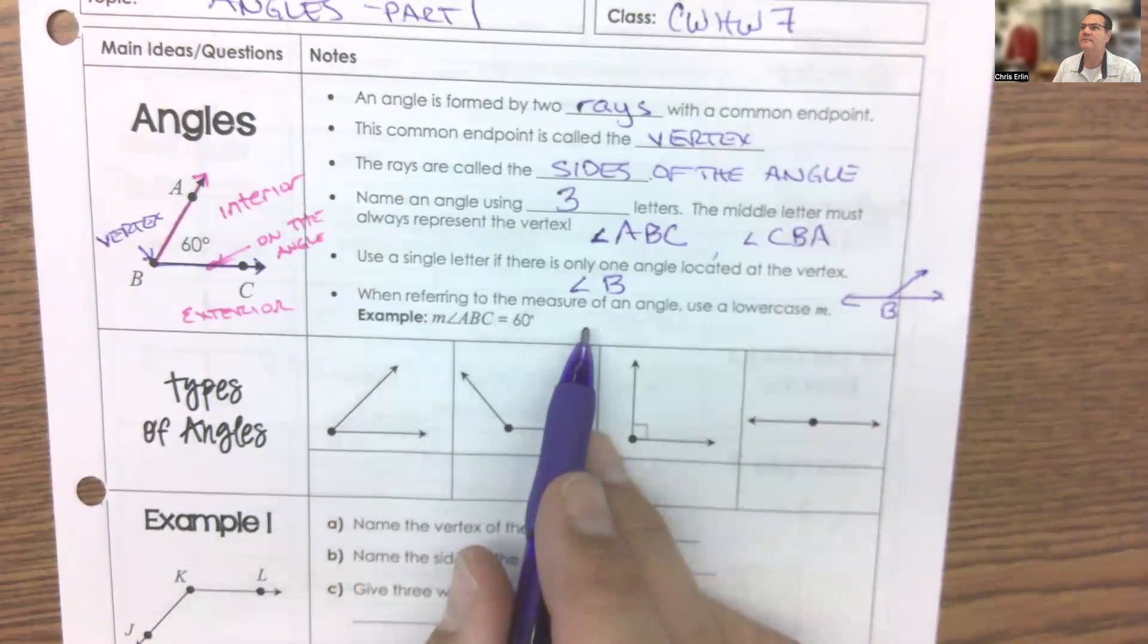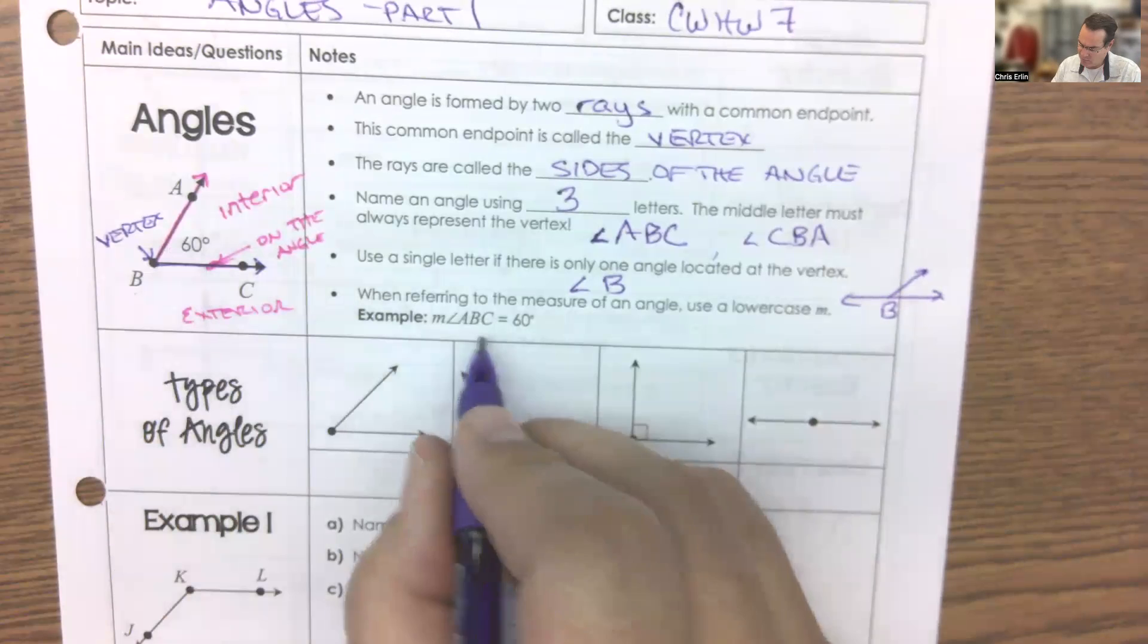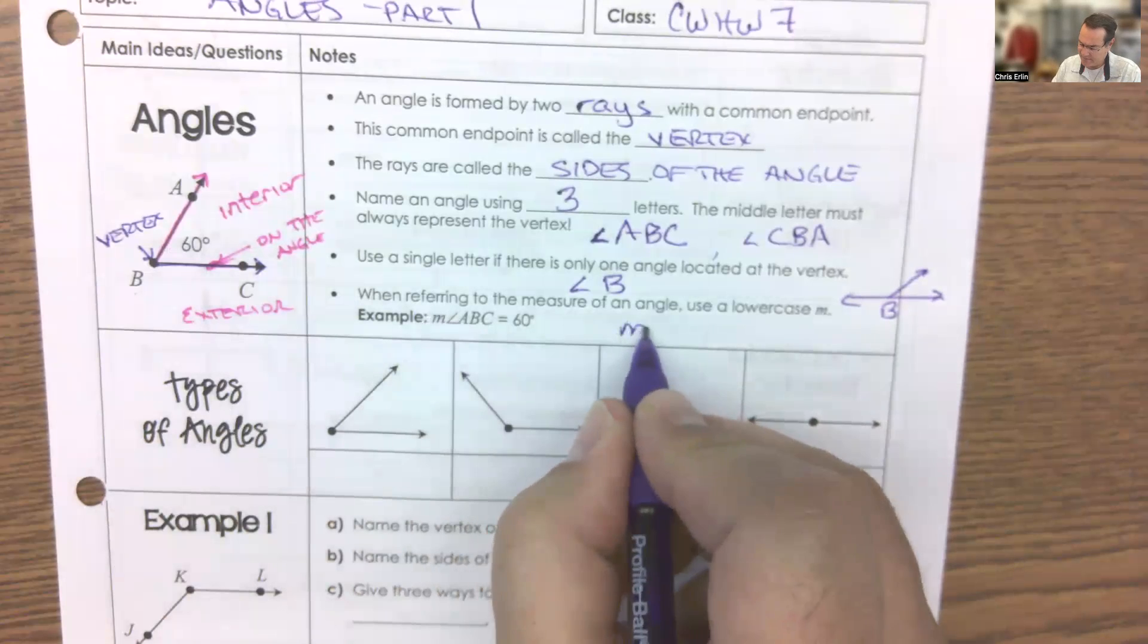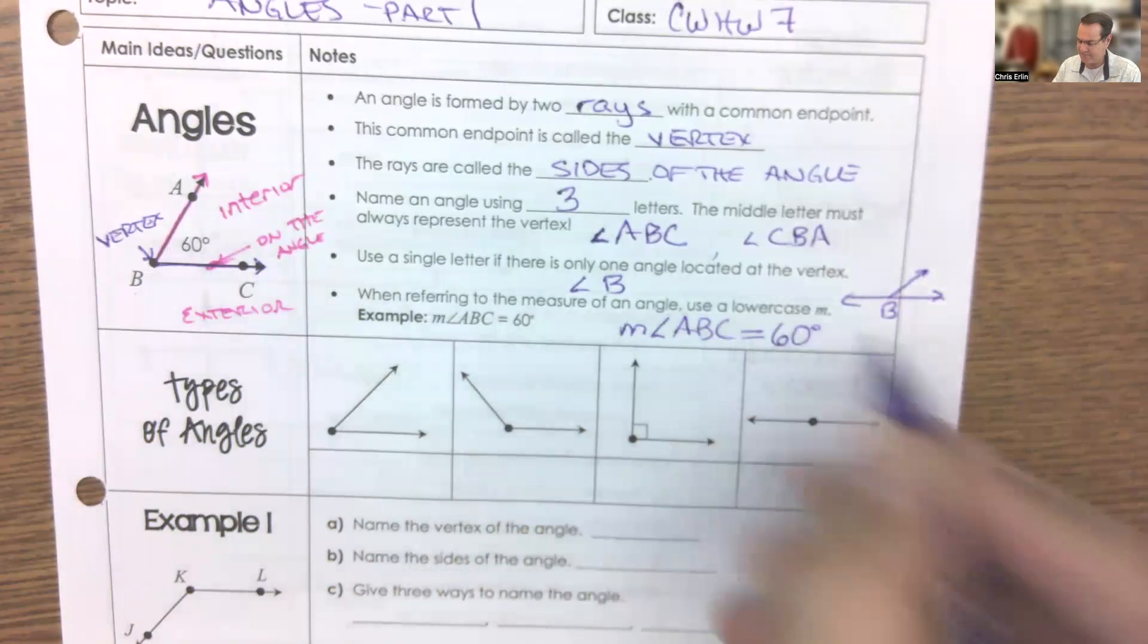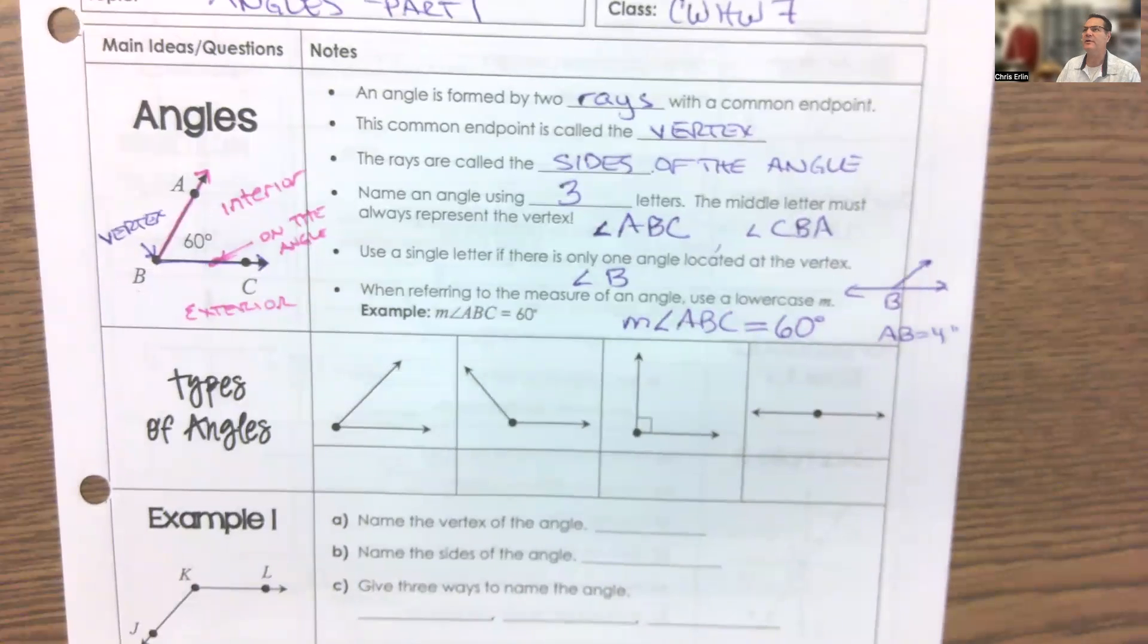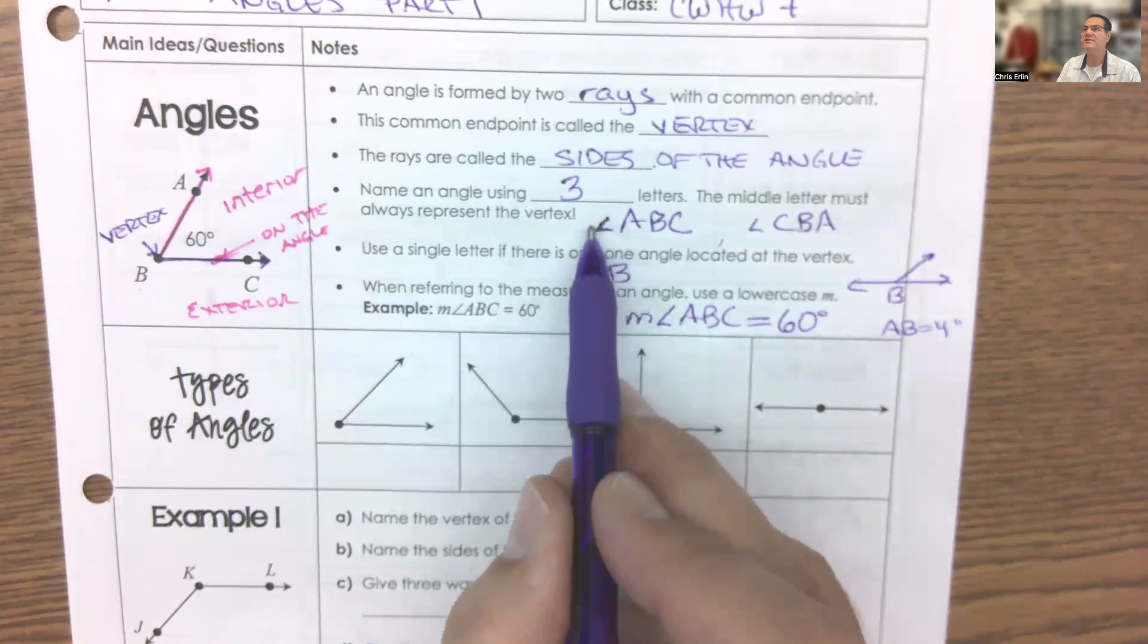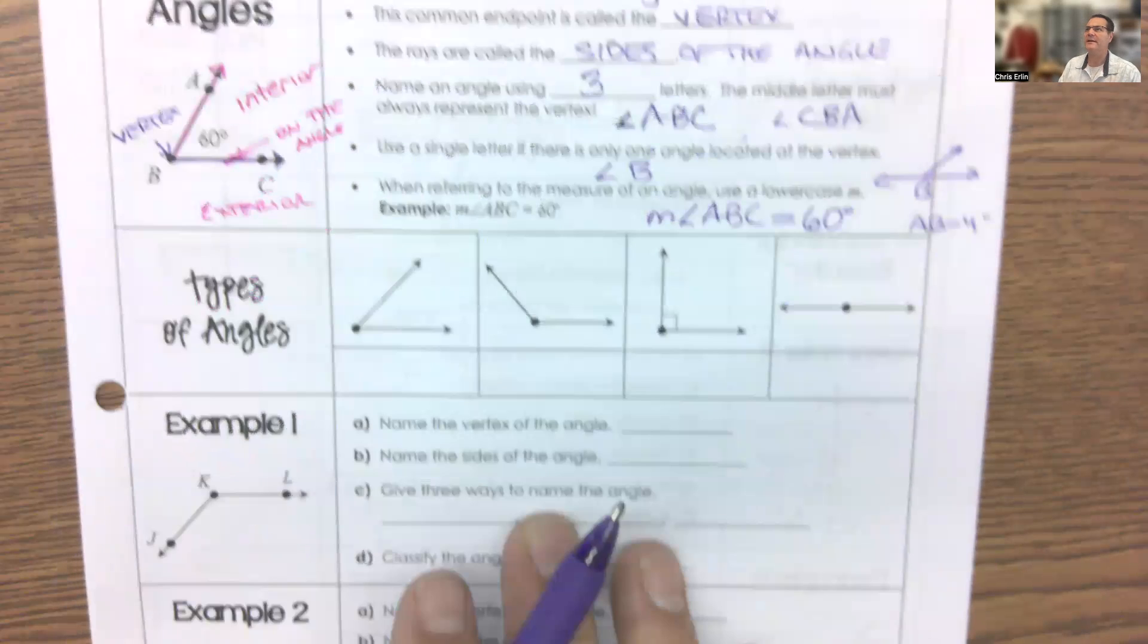When we want to talk about an angle's measure, just the numerical value, like the 60 degrees here, what we would do is we'd put this little M in front of it. We'd say that the measure of angle ABC is equal to 60 degrees. And it's kind of akin to that thing where we say that the length of AB is equal to 4 inches or something. We're just talking about the measurement of it. We're not talking about the object itself. If we just put angle in front of it, now we're talking about the object itself. We'll cover this in greater depth later.